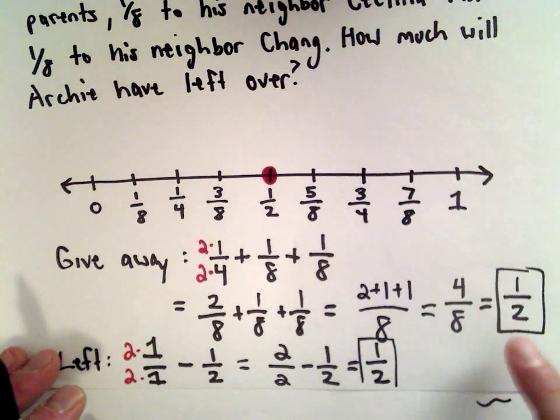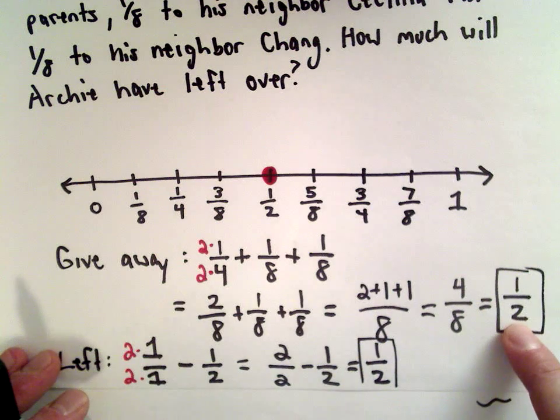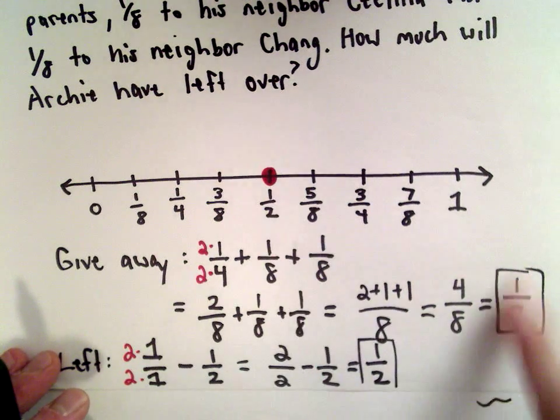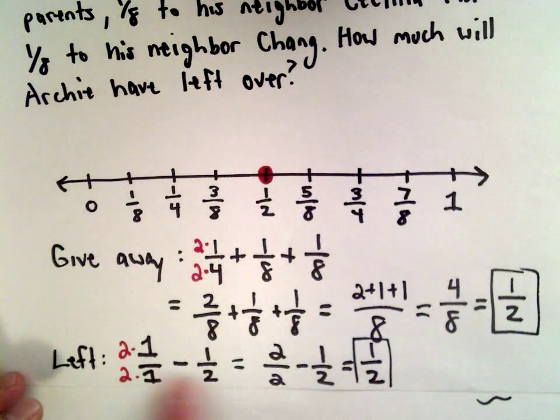So, you know, maybe if it wasn't such a nice number, I think this is a little more intuitive, right? If he gives half away, how much does he have left? A half. You know, suppose this was a slightly different fraction. This would be how you could go about figuring out how much he had left.